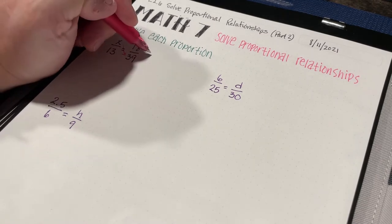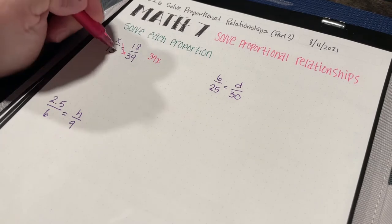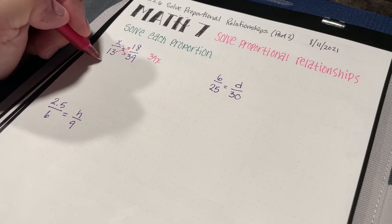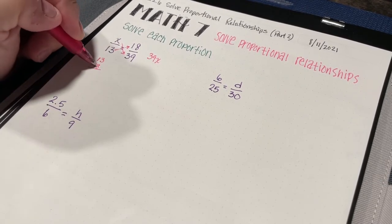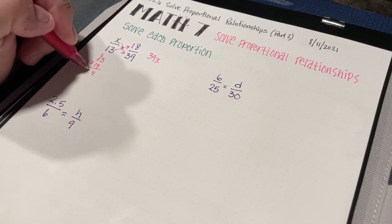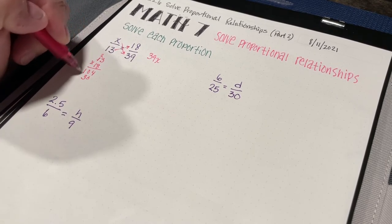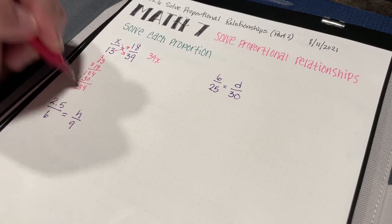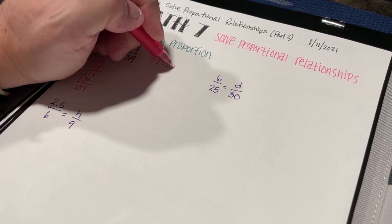Then I'm going to go 13 times 18. I don't know what that is, so I'll work it out: 8 times 3 is 24, 8 times 1 is 8 plus 2 is 10, 1 times 3 is 3, 1 times 1 is 1. So I get 234. So 39x equals 234.